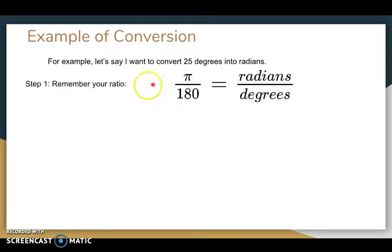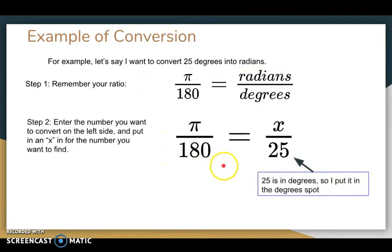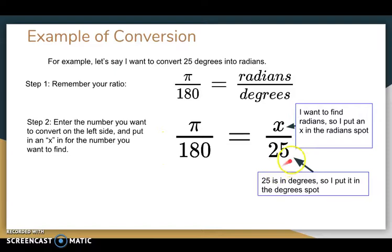Step one, remember your ratio right here. Step two, you got to enter the numbers. So I'm going to put 25 here where I had degrees before, and then I'm going to put x here for radians because I don't know how many radians it is yet. And that's what I want to find out. So I'm going to look for x.